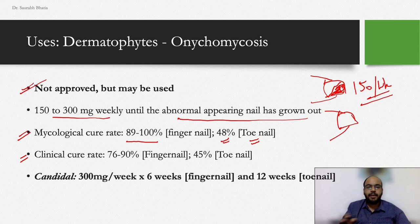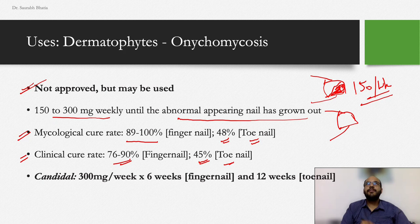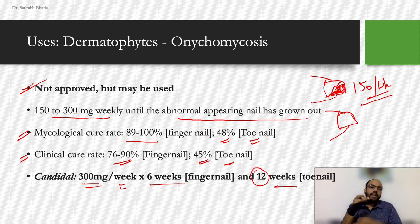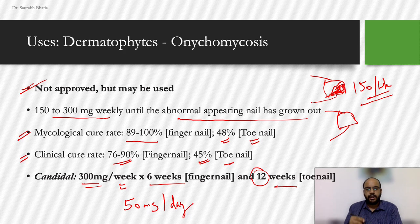Clinical cure rates — meaning mycological cure plus the nail becoming completely normal — are 76–90% for fingernails and about 45% for toenails. If KOH and culture confirm candida as the causative organism, the dose is 300 mg per week for six weeks for fingernails and 12 weeks for toenails. If using daily dosing, 50 mg/day can substitute the pulse dose, but weekly boluses are preferred.